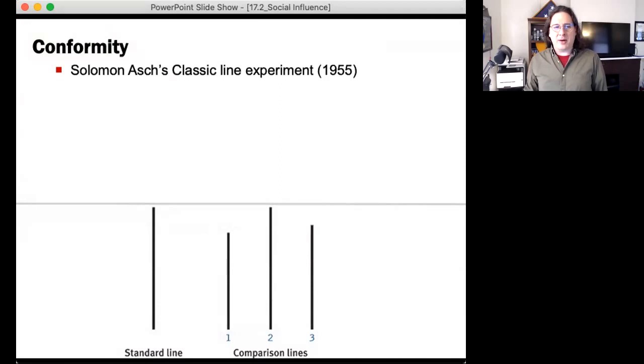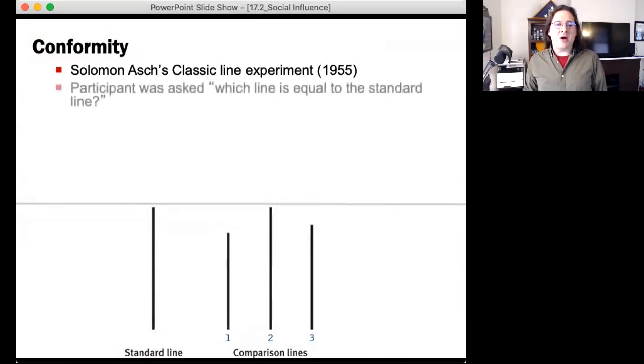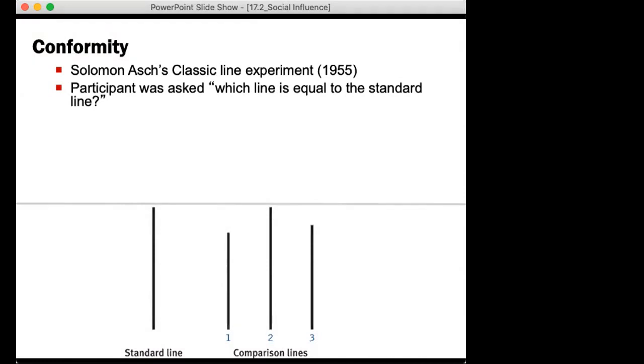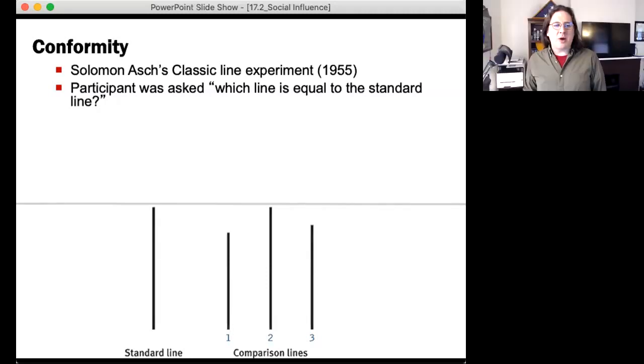Let's talk about conformity. Back in the 1950s, Solomon Asch performed an experiment called the line experiment where he asked participants which line is equal to the standard line. What line on the left do you think matches the line on the right? Two.